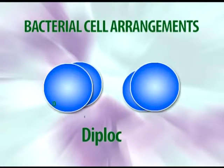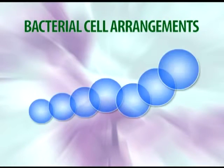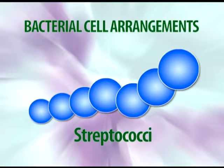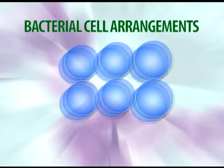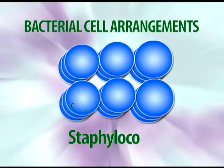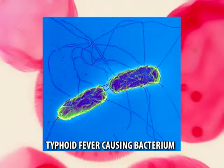As for arrangement, these rods or spheres can be present singly, or they can be paired — when paired, we call them diplococcus or diplobacillus. When they are in chains, we call them streptobacilli or streptococci. Likewise, they can sometimes be present in the form of grape-like structures or clusters, which we call the staphylo-type arrangement.